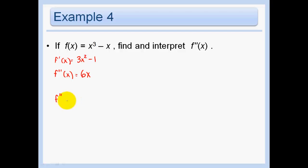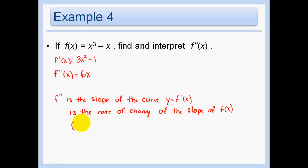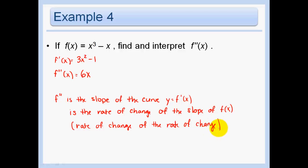So what do we know? f prime prime is the slope of f prime — the rate of change of the slope. In other words, it's the rate of change of the rate of change. Key point: remember the derivative is a rate of change.